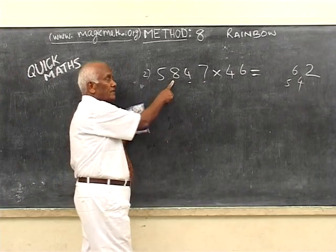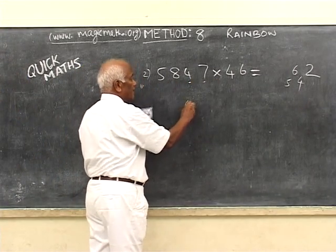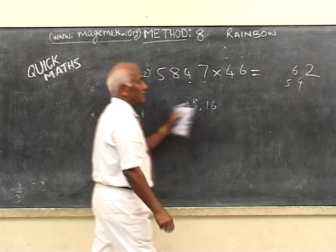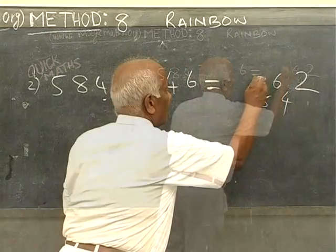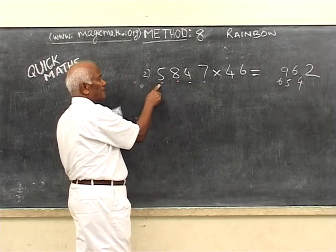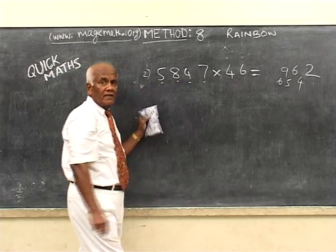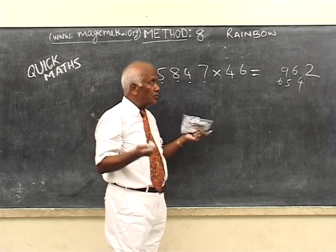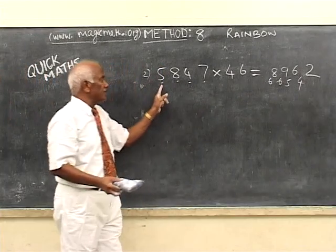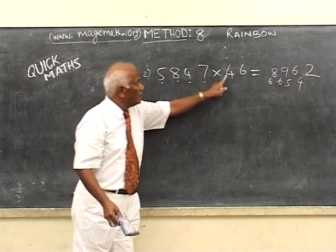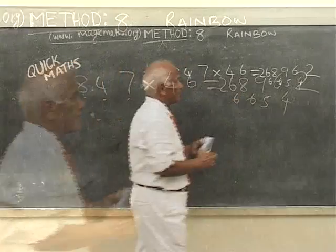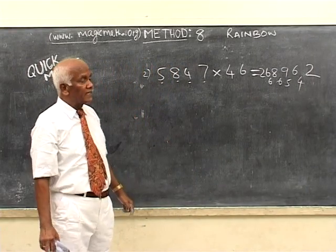6 eights are 48, 4 fours are 16. 48 plus 16 is 64, plus 5 carried is 69. Put 9, carry 6. 6 fives are 30, 4 eights are 32. 30 plus 32 is 62, plus 6 carried is 68. Put 8, carry 6. Now 6 has finished its job — no more work, leave it. 4 continues: 4 fives are 20, plus 6 carried is 26. Put 26.